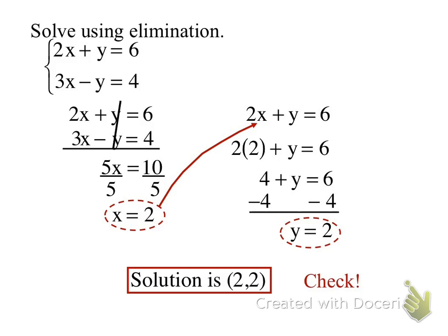The beauty of systems is that what answer you get, we can do it mentally and check our work. 2 times 2 is 4 plus 2 is 6. Does that equal 6? Yes. 3 times 2 is 6 minus 2. Does that equal 4? Yes. So it works.